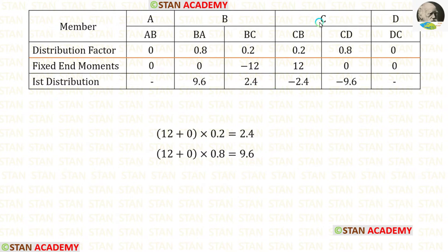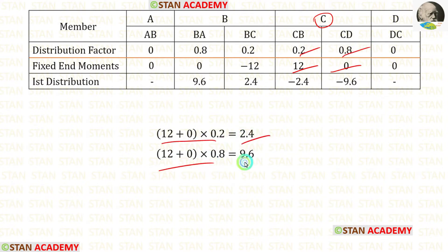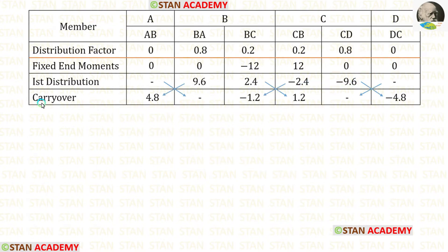Now let us do the distribution in joint C. For that we have to add these two values and then multiply with the distribution factors. When we do that we are getting positive values, so we have to enter them as negative. Now let us do carry over — we have to divide these values by 2 and enter the answers.